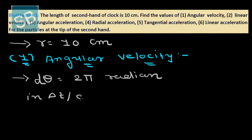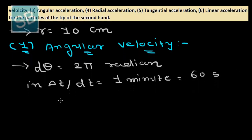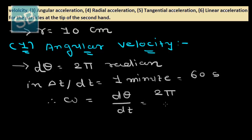The time interval dt is 1 minute, which we convert to 60 seconds. According to the equation of angular velocity, ω equals dθ/dt equals 2π divided by 60, which gives π/30 radians per second.